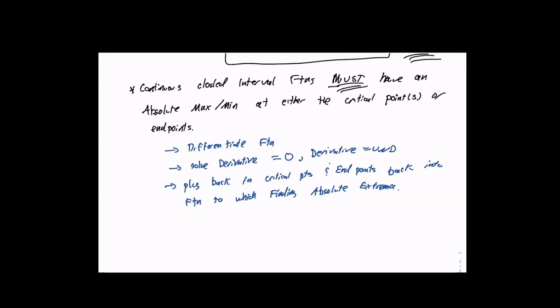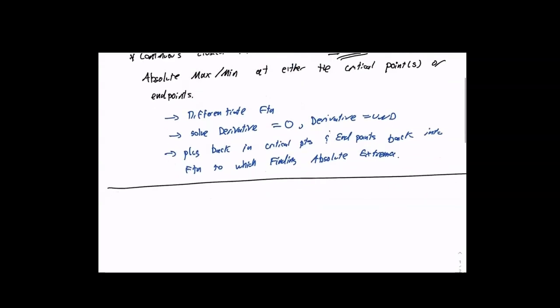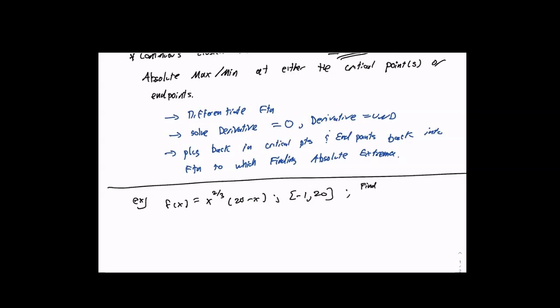You may not always be looking to max or minimize the function f itself — I'll show you as such. So first, let's look at an example. The function I'm going to look at here is f of x equals x to the two-thirds times the quantity 20 minus x. We want to find the max and min for f of x, and of course, justify.